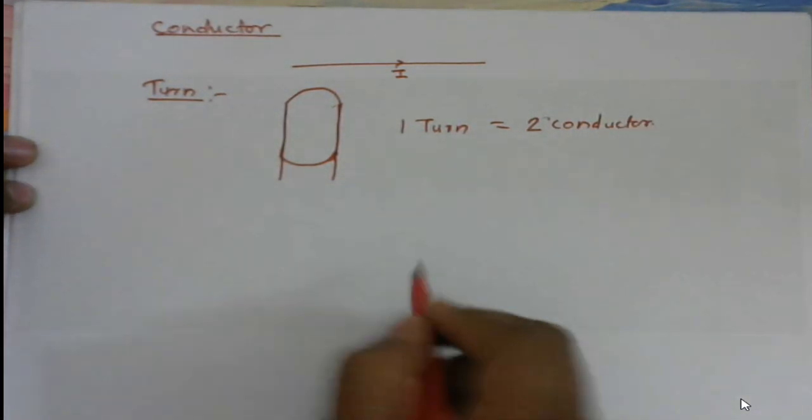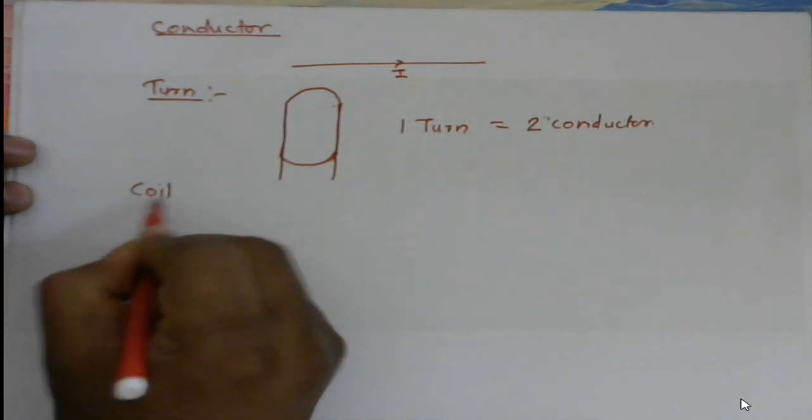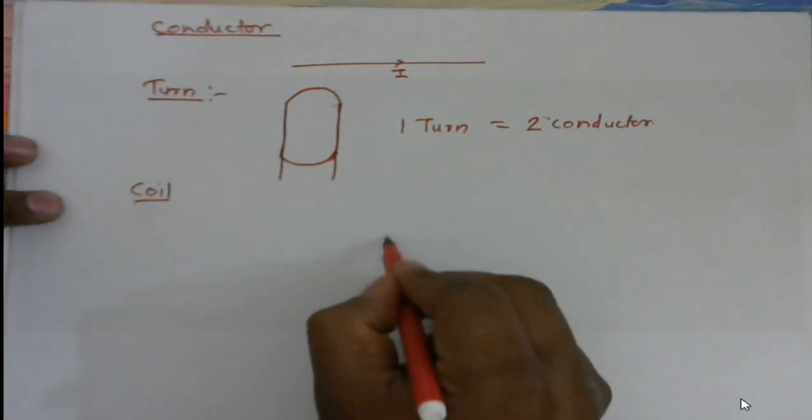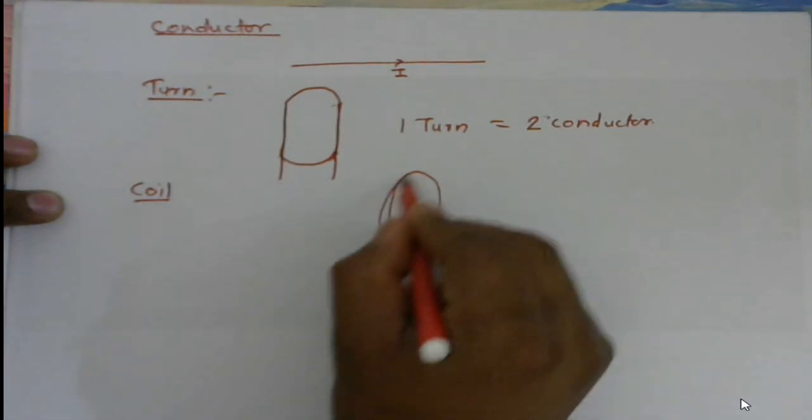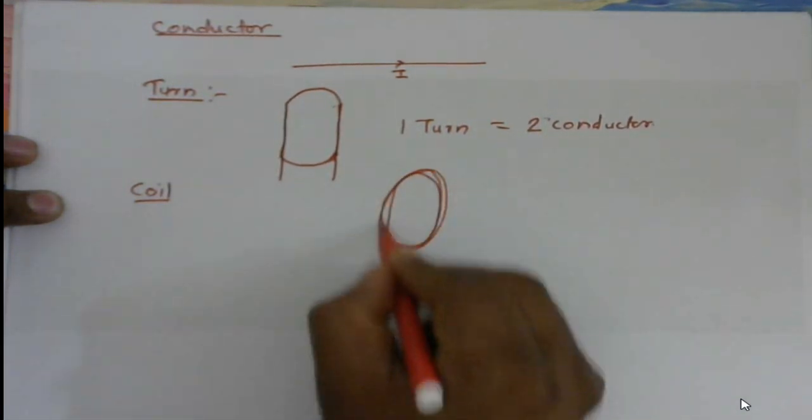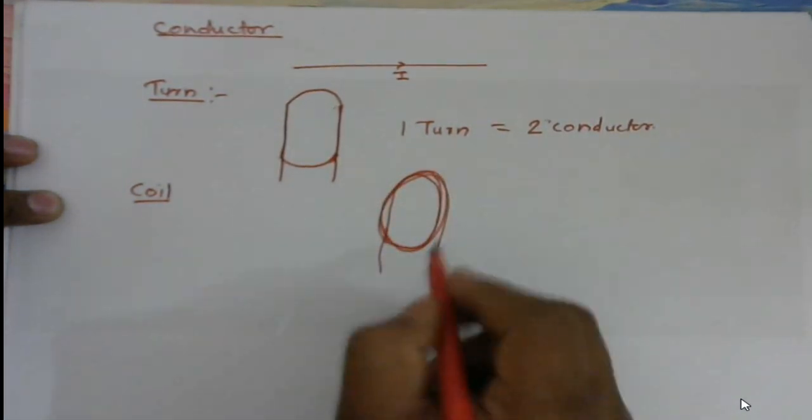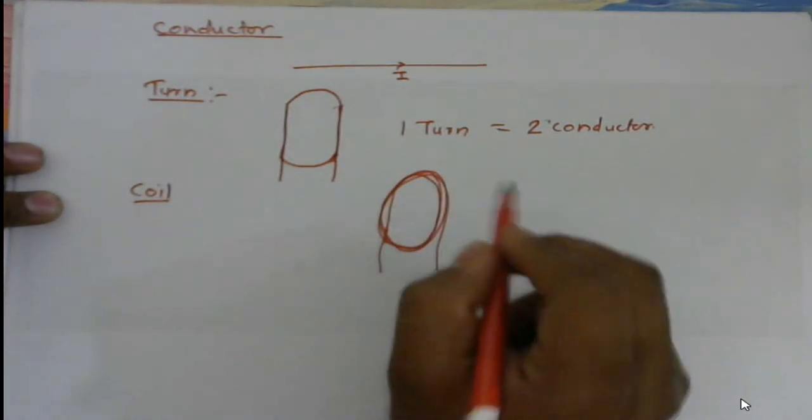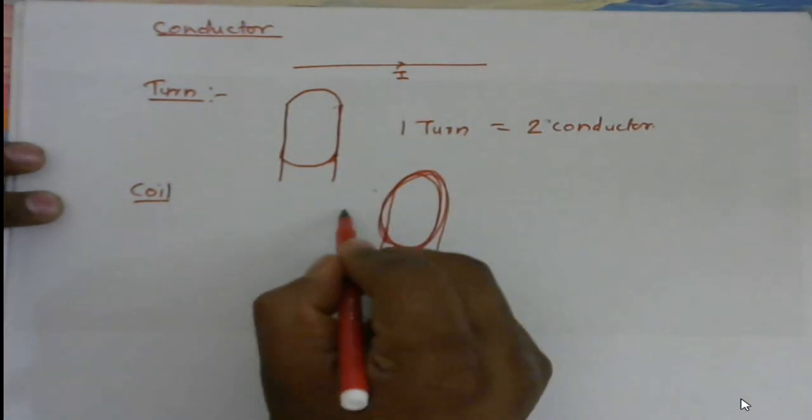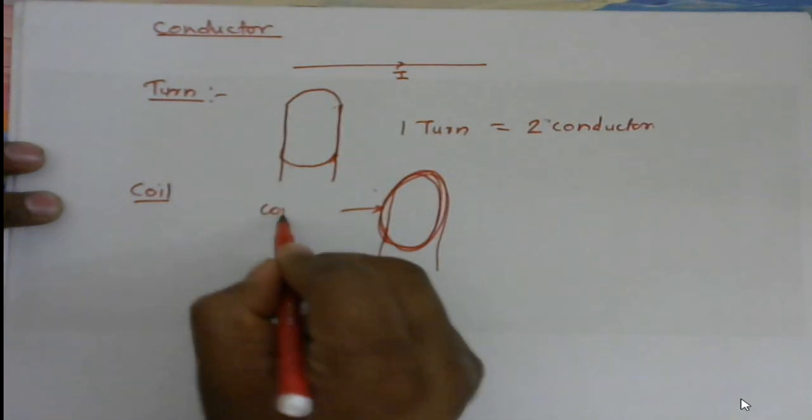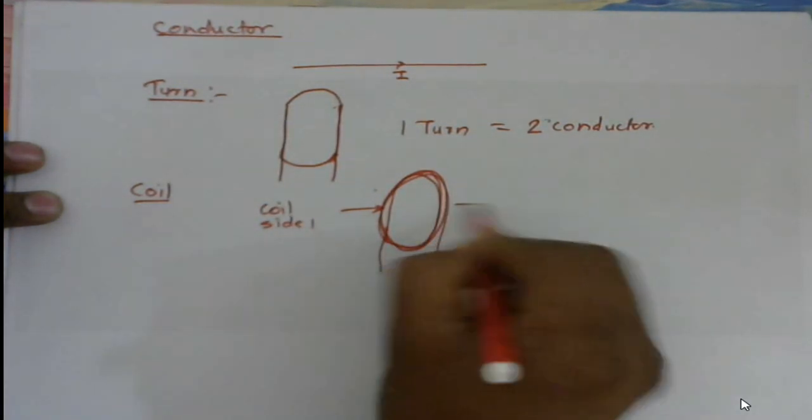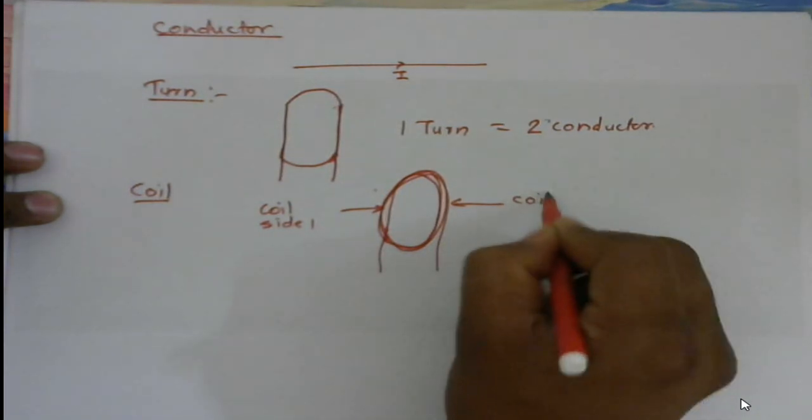After this, let us talk about the coil. So if there is a coil which is having n number of turns, so if we are going to give the n number of turns, then it will form a coil. This coil is having two coil sides. This one is coil side one, and this is coil side two.